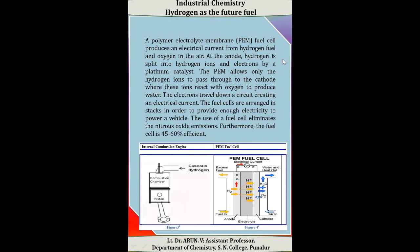A polymer electrolyte membrane fuel cell produces an electrical current from the hydrogen fuel and oxygen in the air. At the anode, the hydrogen is split into hydrogen ions and electrons by the platinum catalyst. The PEM allows only the hydrogen ions to pass through to the cathode, where these ions react with oxygen to produce water. The electrons travel down a circuit creating an electric current. The fuel cells are arranged in stacks in order to provide enough electricity to power the vehicle.